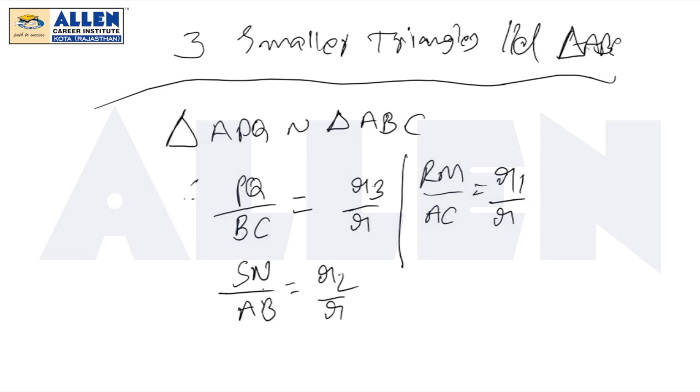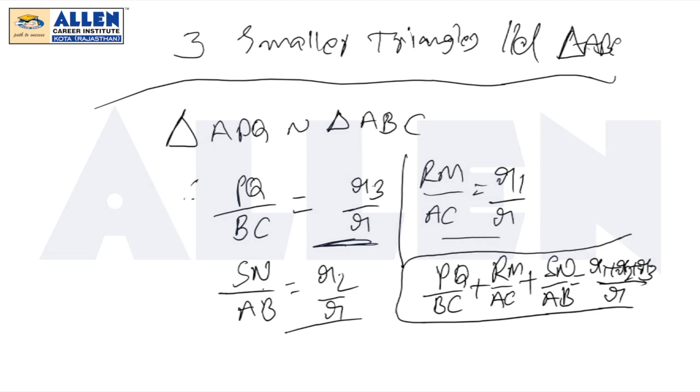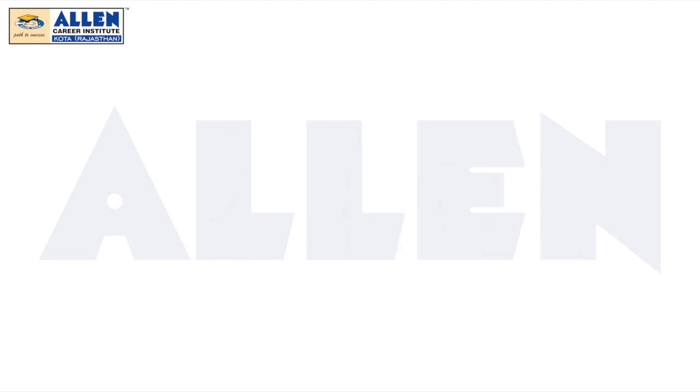Adding these three equations, we get PQ by BC plus RM by AC plus SN by AB equals R1 plus R2 plus R3 divided by R. If we can find the left-hand side value, then we can easily find R1 plus R2 plus R3. So we have to find this value.